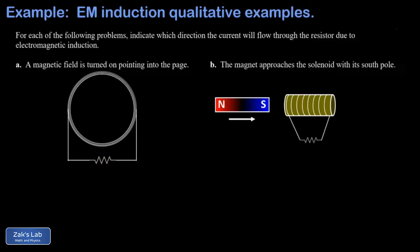And so what happens in this part is that a magnetic field is turned on pointing into the page. So there's the new magnetic field that we've exposed this loop to, and the loop is going to respond by producing magnetic field out of the page in order to minimize that change in flux.